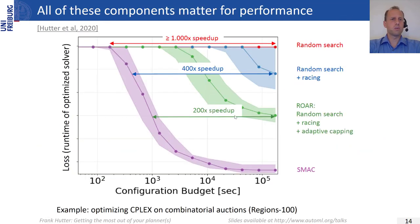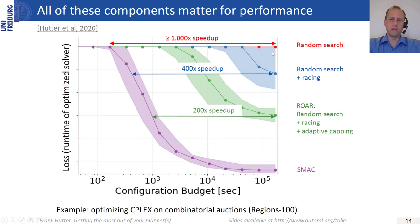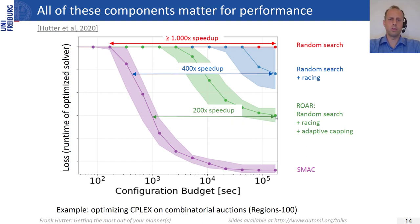SMAC in a nutshell: Bayesian optimization with random forests proposes new configurations; aggressive racing and adaptive capping compare them to the incumbent. All these components matter. Random search on all instances makes no improvement over the default. Adding racing gives some improvement. Adding adaptive capping gives more. But Bayesian optimization still provides over 200-fold speed-up compared to random search with racing and adaptive capping.